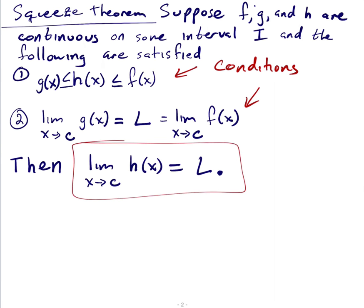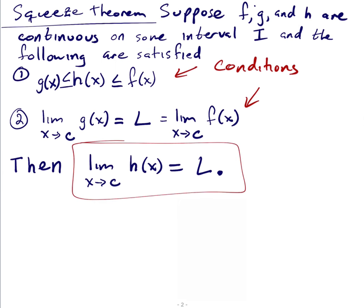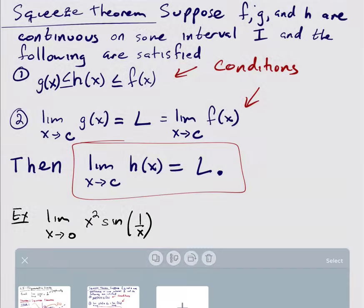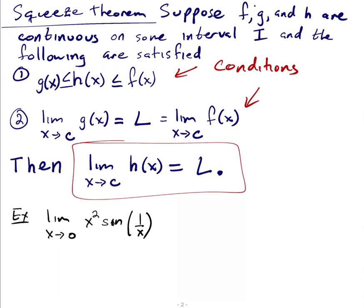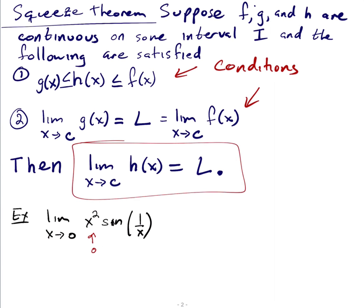Let's start with a relatively simple example, and then we'll do the one from the beginning. Let's say you have the limit as x approaches 0 of x squared times sine of 1 over x. If we follow our usual technique, we plug in 0 first.